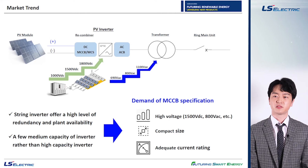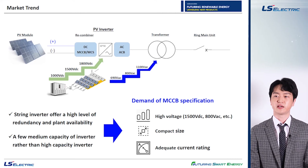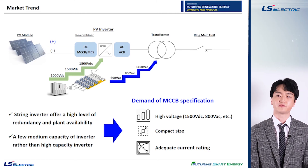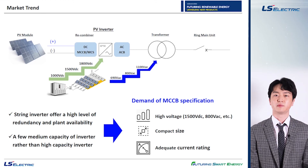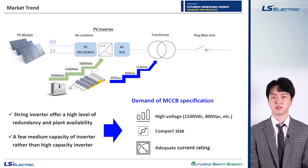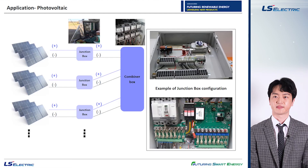At this moment we have a full lineup of 1500 DC volts and 800 AC volts for MCCB commonly used in PV and ESS applications.